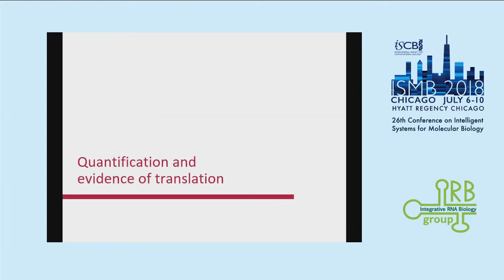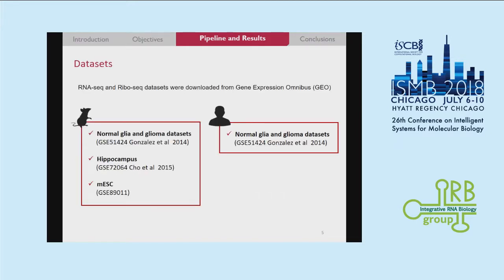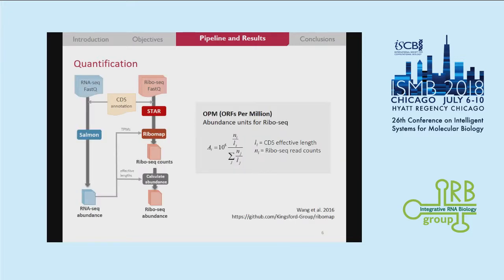Moving to the first part of quantification and how we look for evidence of translation, we had different datasets — paired RNA-seq and ribo-seq experiments. We had data from glioma for human and mouse, and also in the case of mouse, hippocampus and embryonic stem cells. For RNA-seq, we get the abundance values in TPM, transcripts per million, using Salmon, taking the same annotation to make comparison with ribo-seq easier.